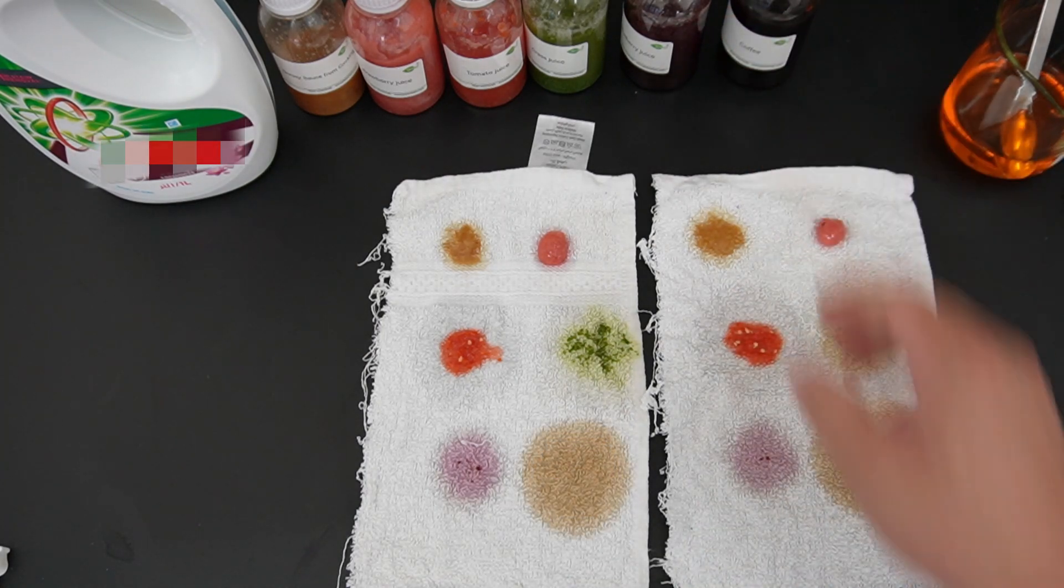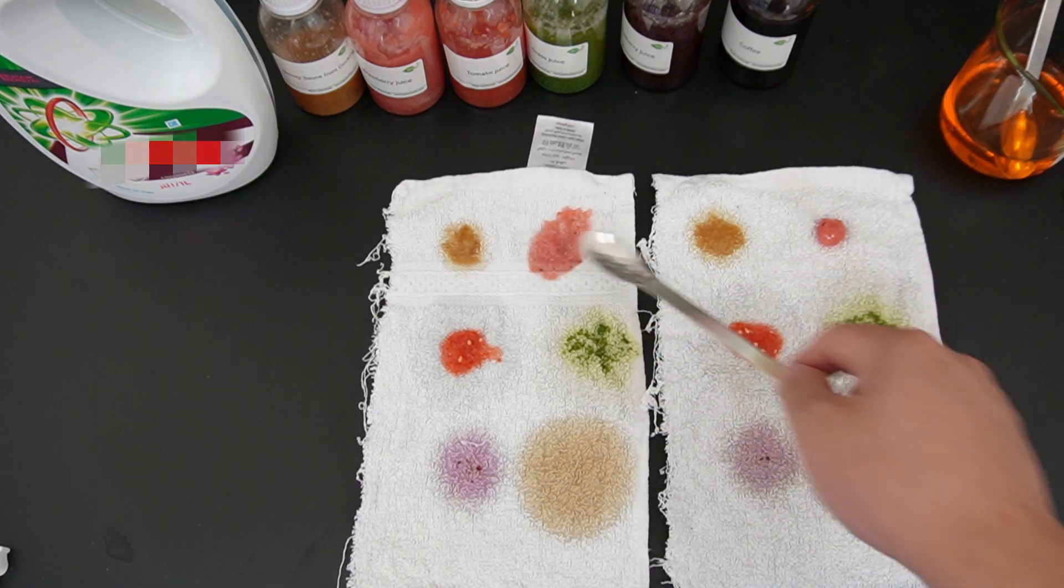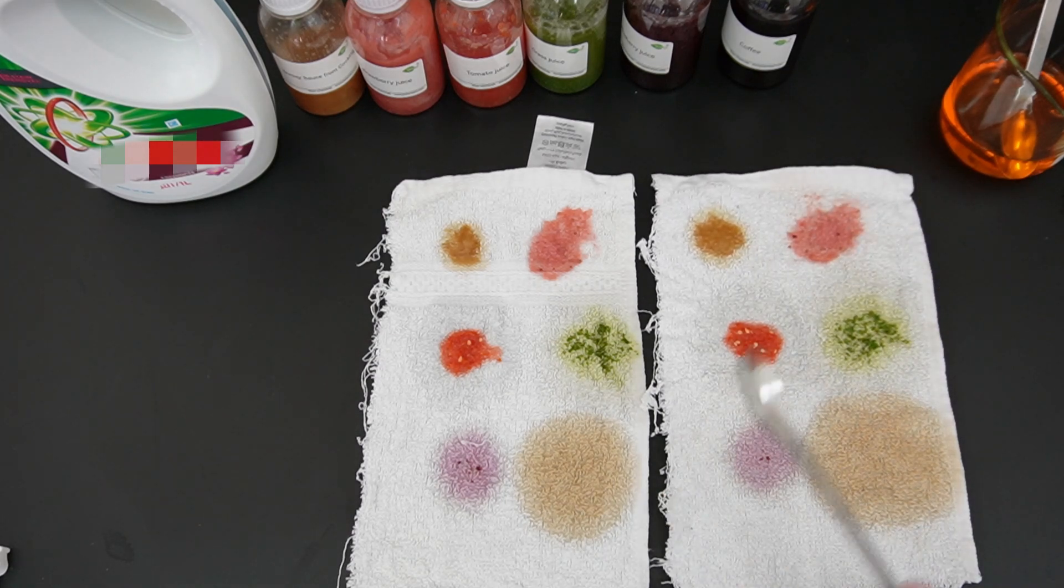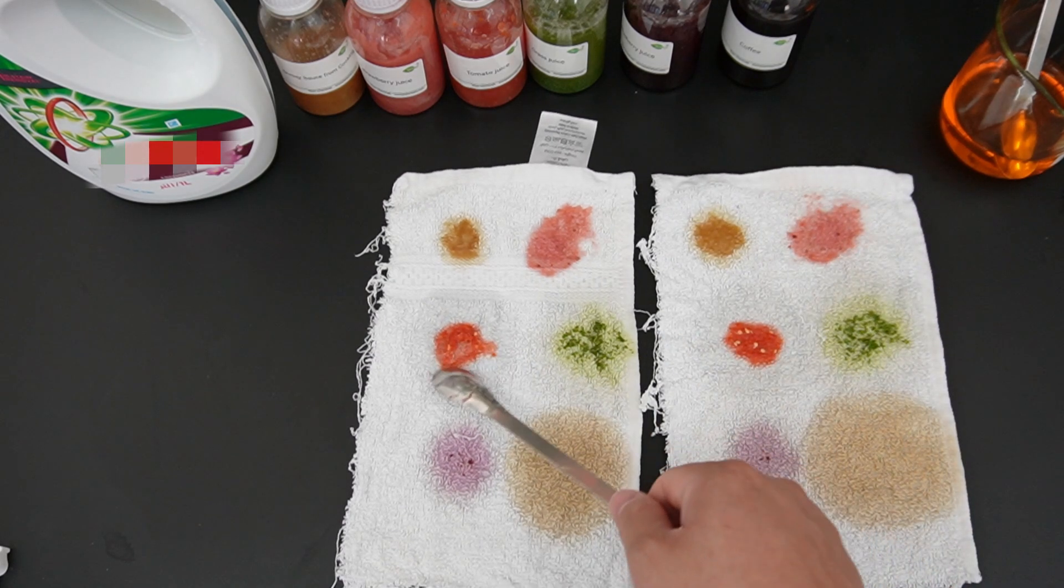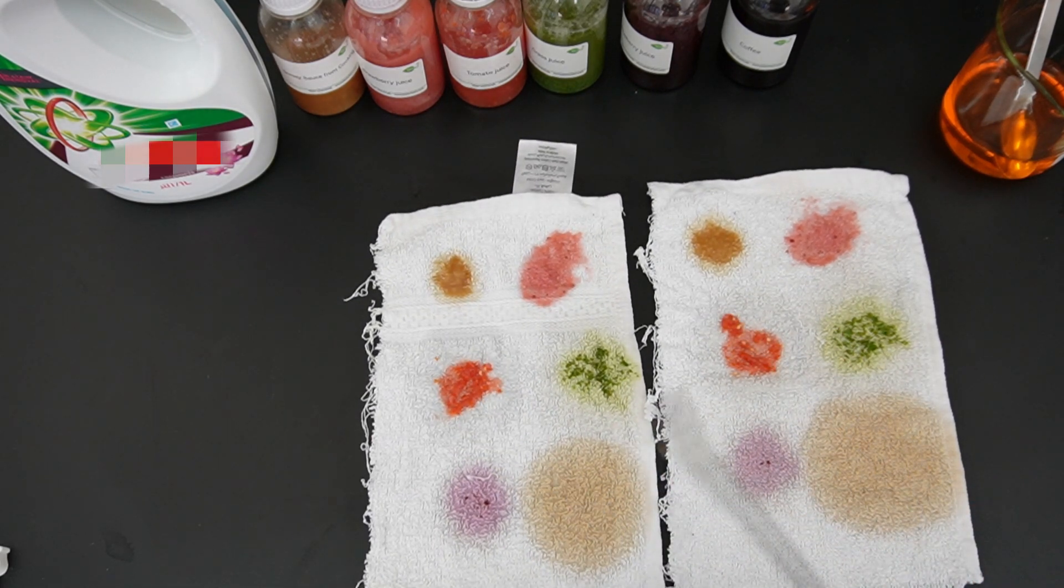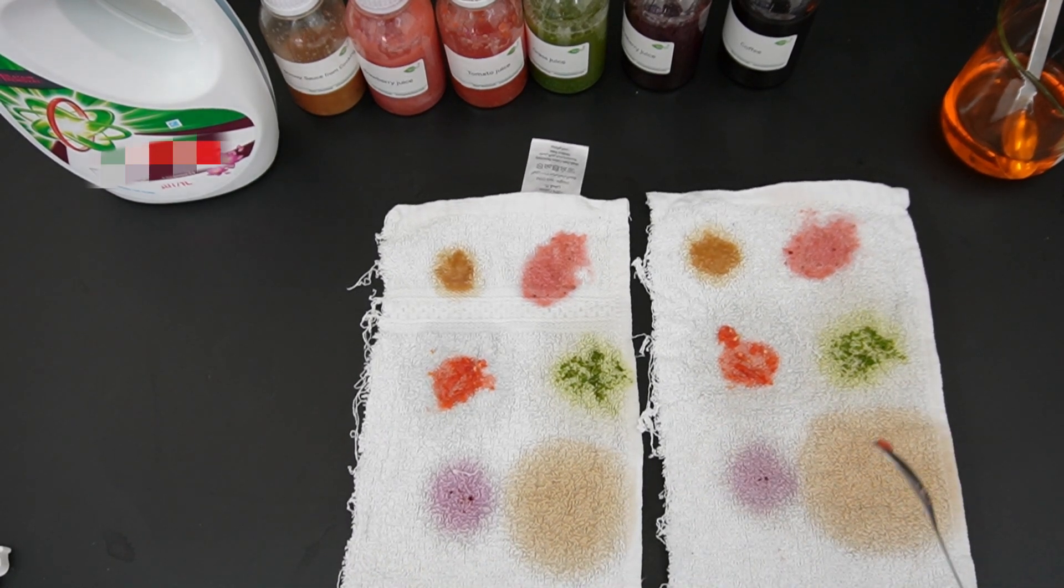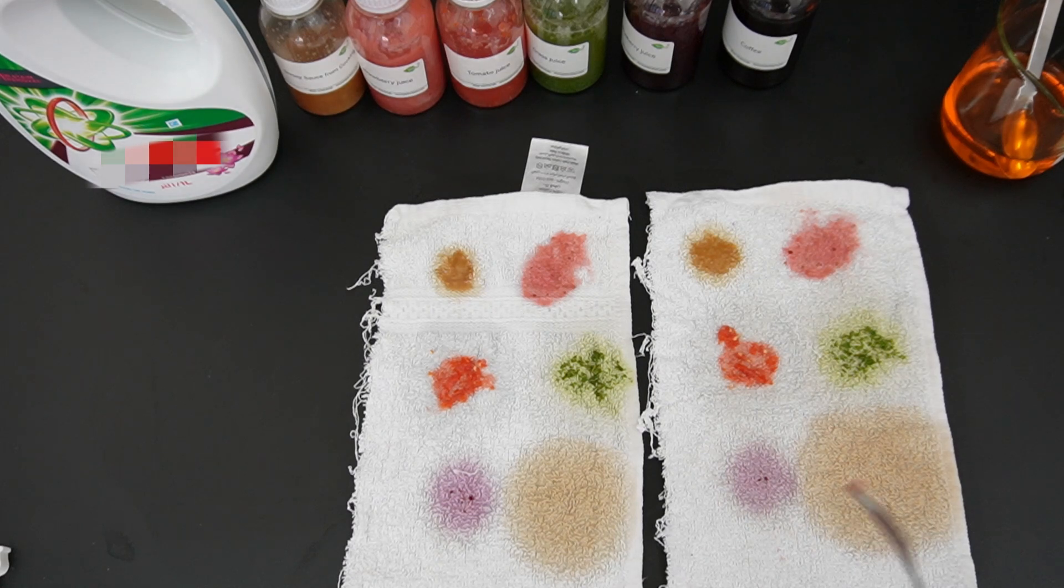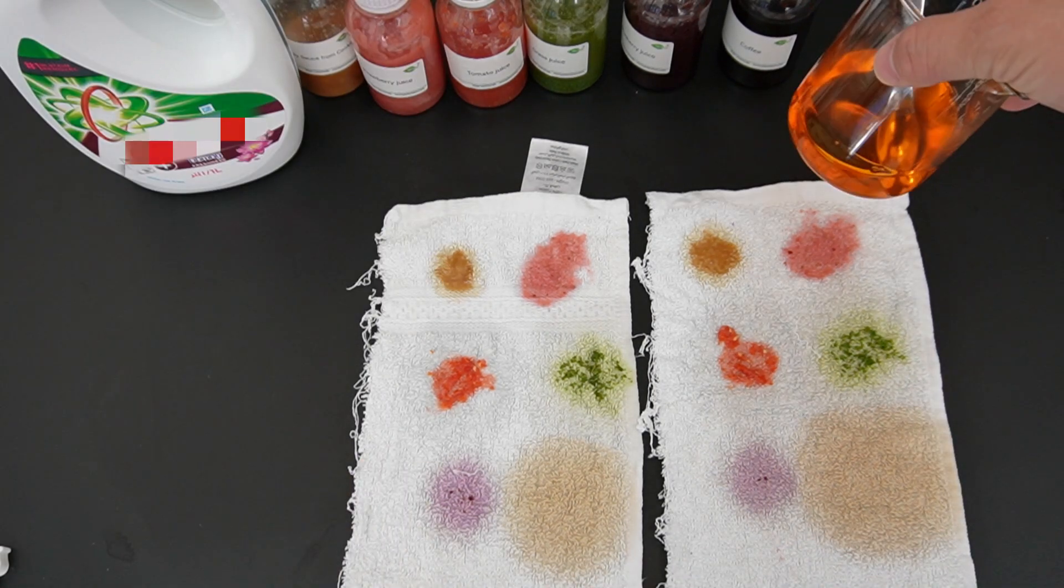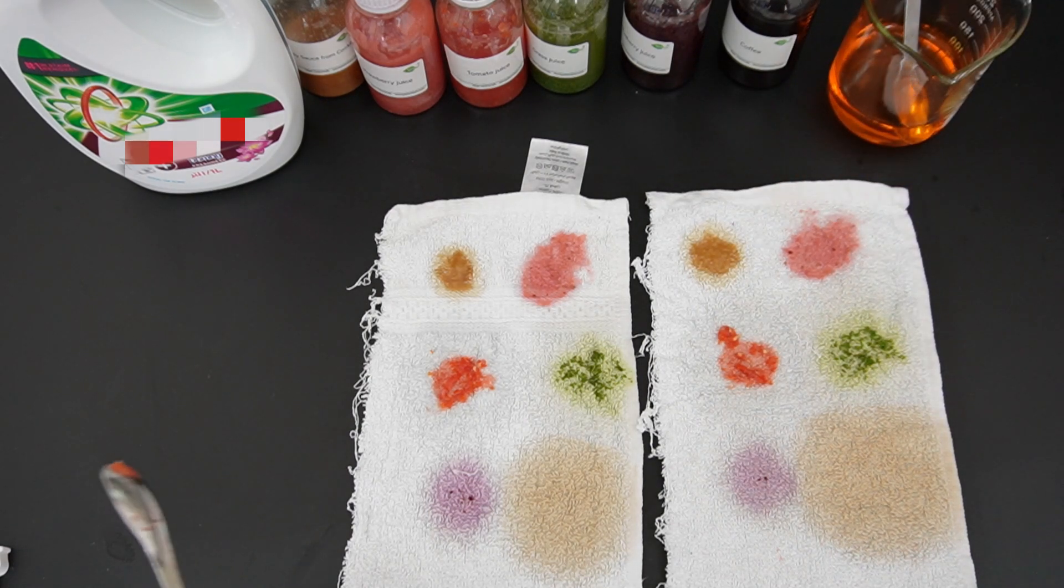Okay, we've made these stained clothes with different stains and we will keep them in the sun to dry for 20-30 minutes. Then we're going to wash these two dirty cotton towels with the detergent from a leading brand and also with the detergent that we made from our concentrated base. We will see how they perform.